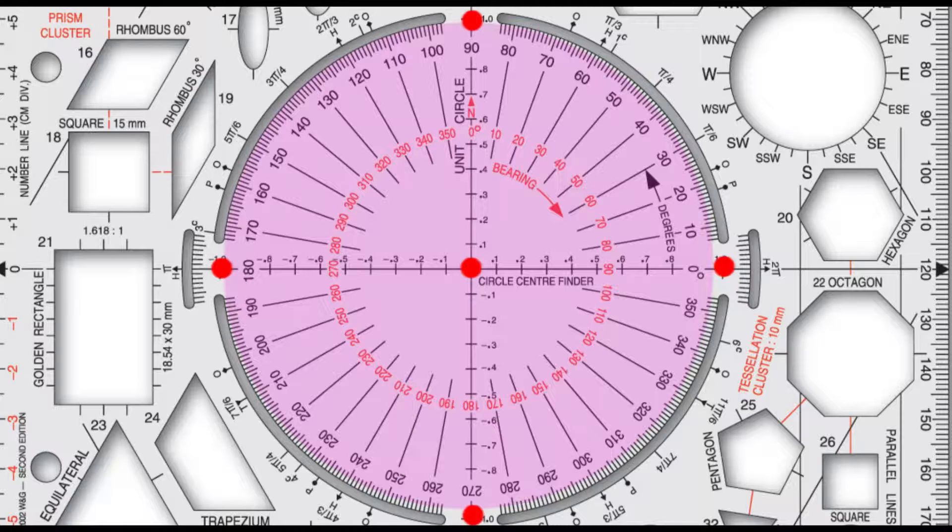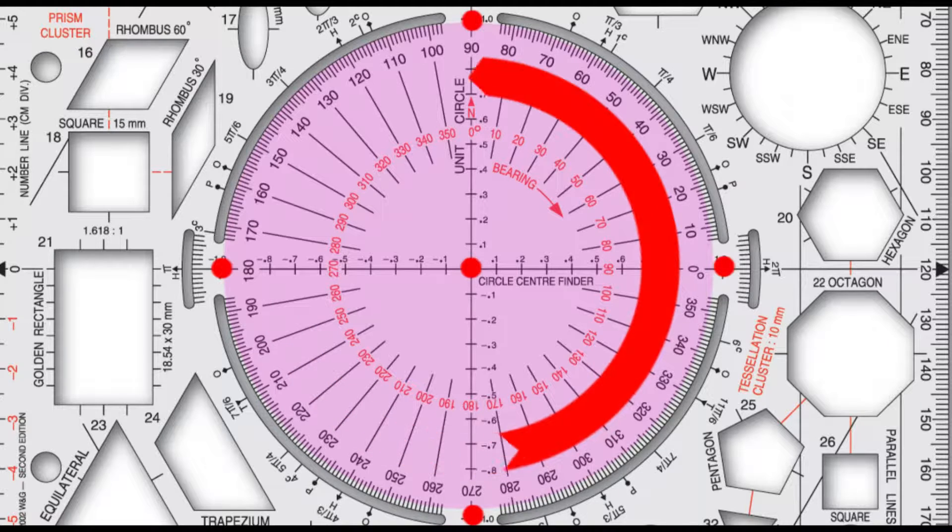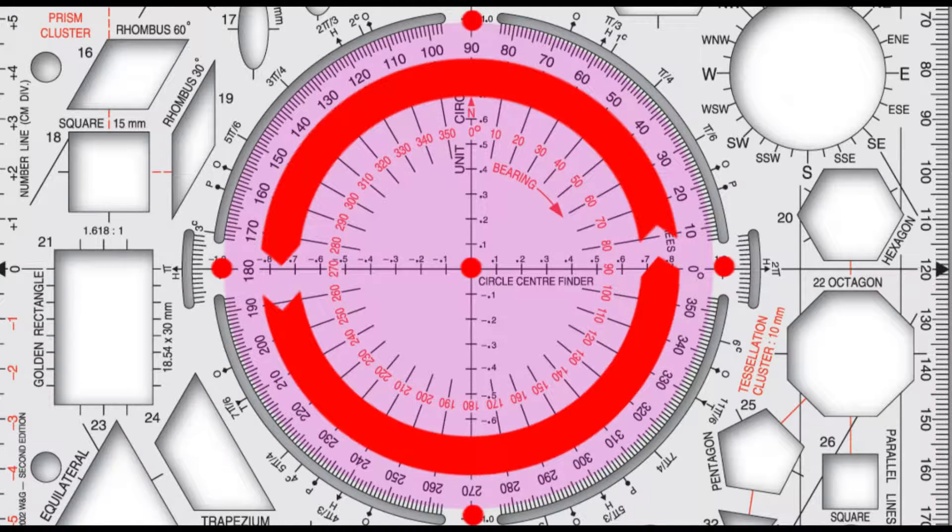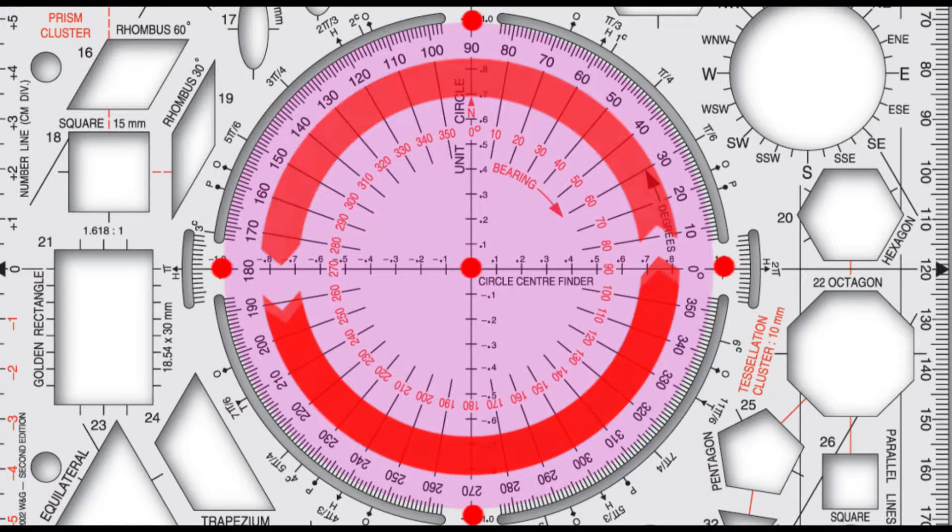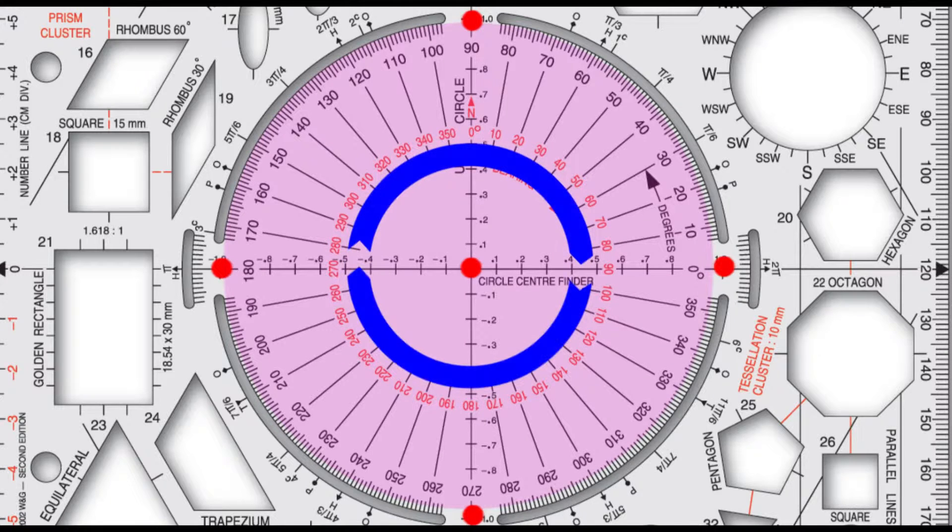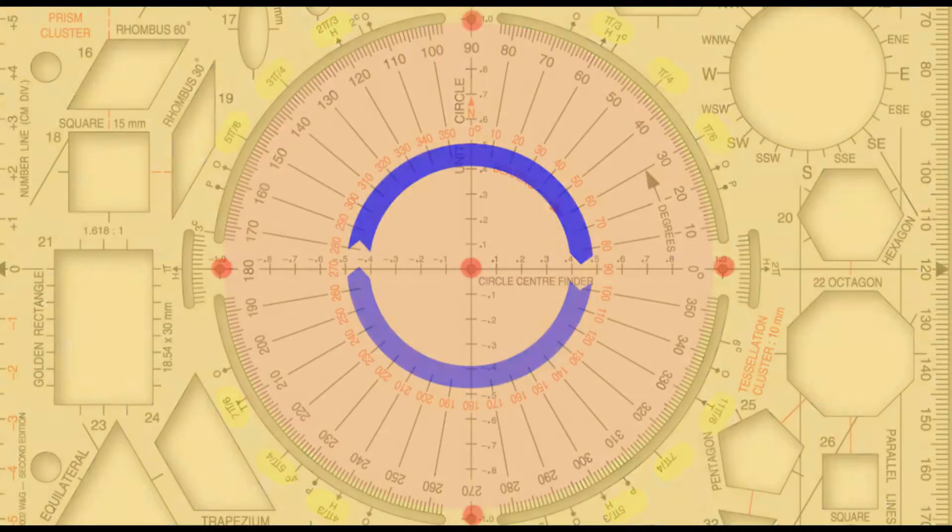Reading the protractor anticlockwise, the learner can now sketch angles from 0 to 180 degrees and then the reflex angles from 180 to 360 degrees. Reading the circle protractor clockwise, a true bearing scale measuring from north 0 to 360 degrees. Around the circumference of the protractor we can measure the circle in radians.